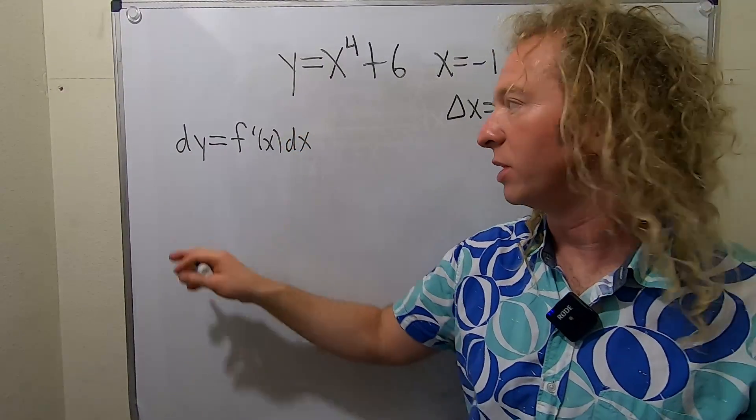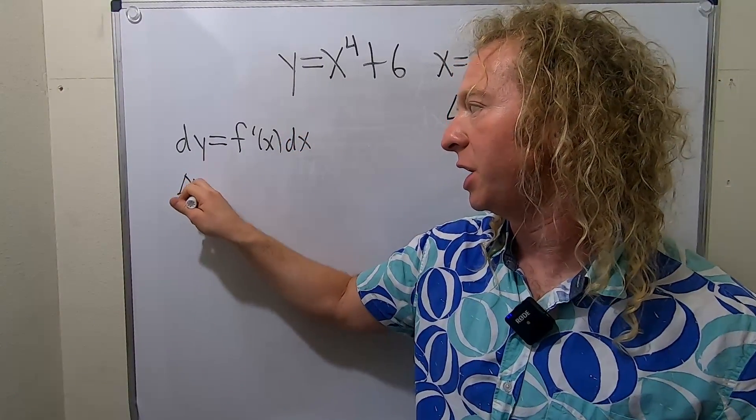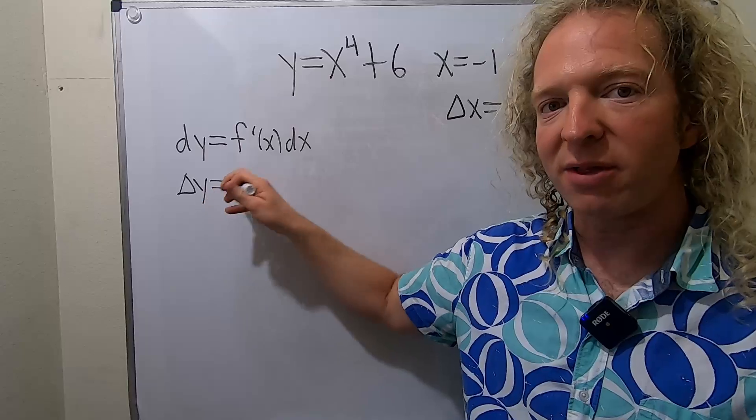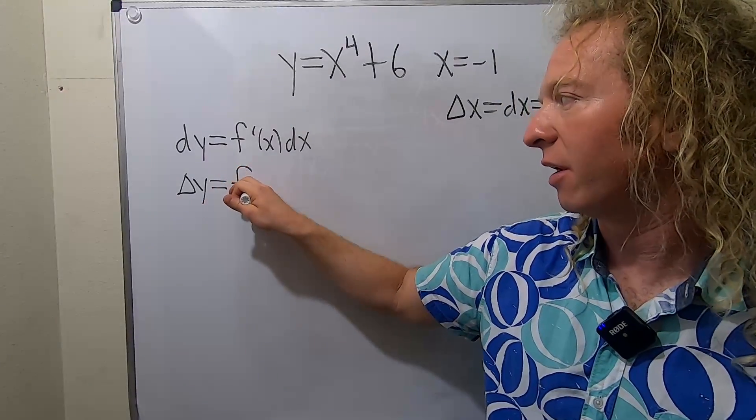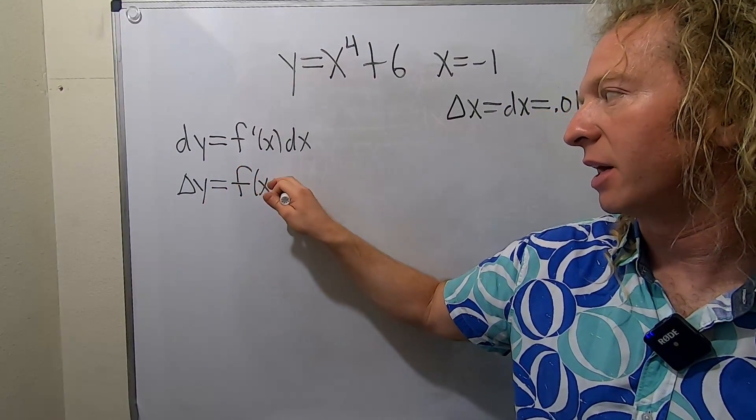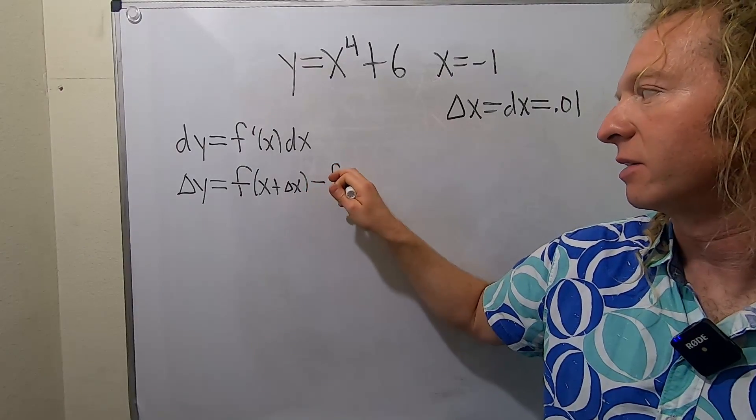This approximates what's called delta y, which is the change in y. The formula for delta y is f of x plus delta x minus f of x.